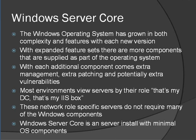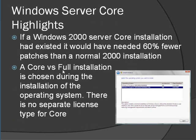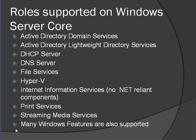Windows Server Core was introduced in 2008 as a scaled-down install version of Windows Server — not a separate license, just an install option you choose during setup. Microsoft found that if there had been a Server Core version of Windows Server 2000, it would have needed 60 percent fewer patches. This is especially useful in branch locations: Server Core is less to patch, less to manage, has a smaller attack surface, and you can still run most roles like Active Directory and DHCP.